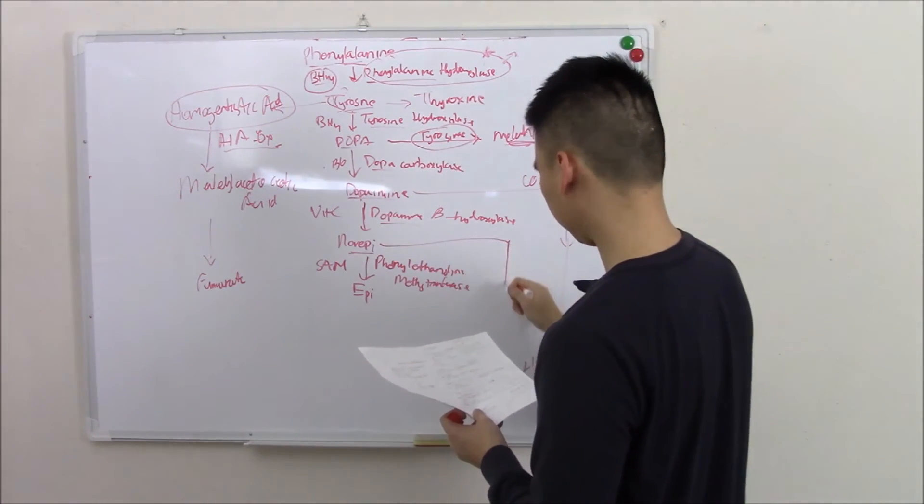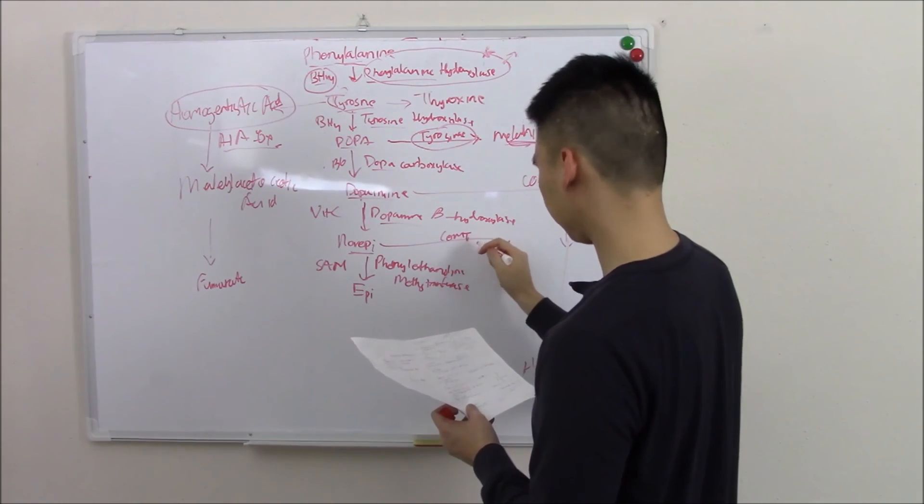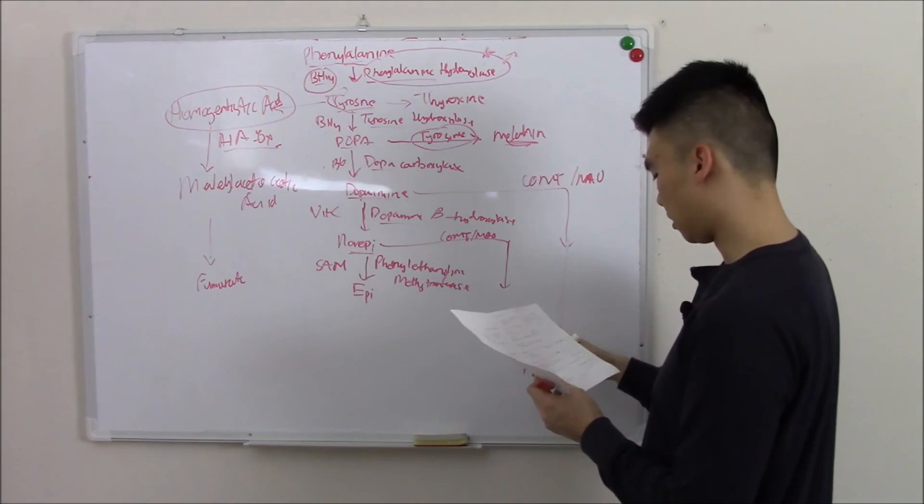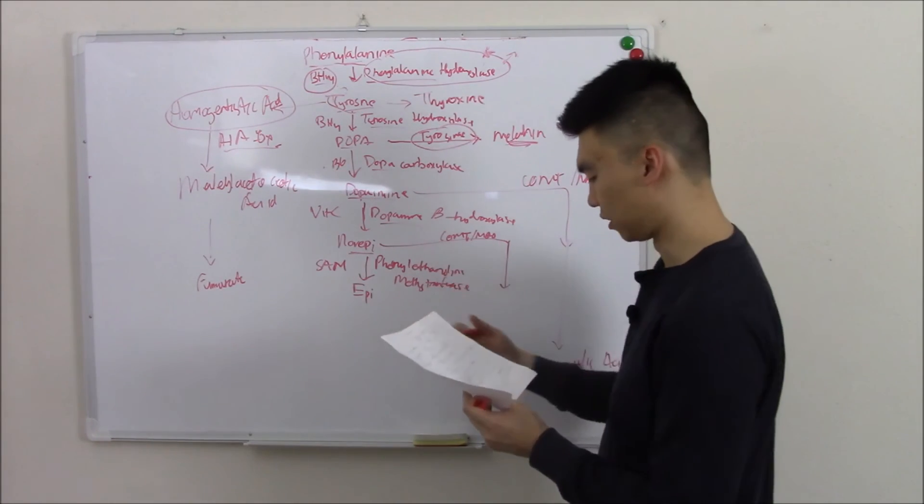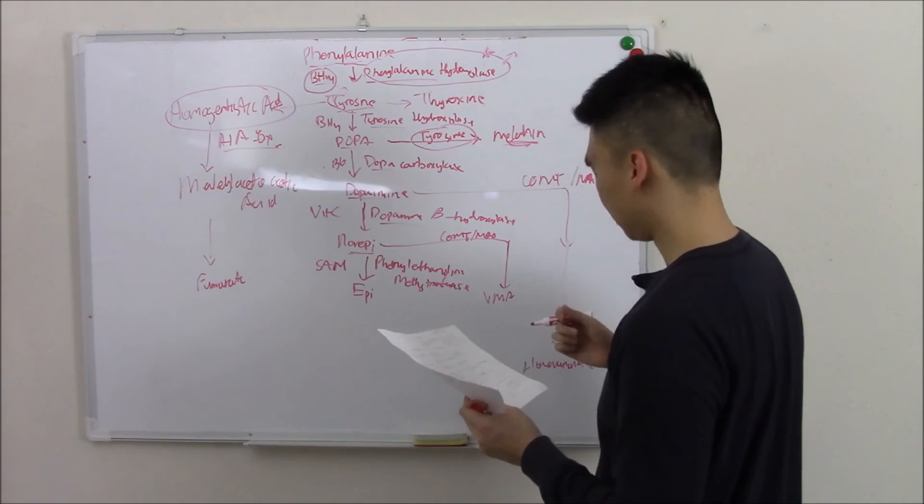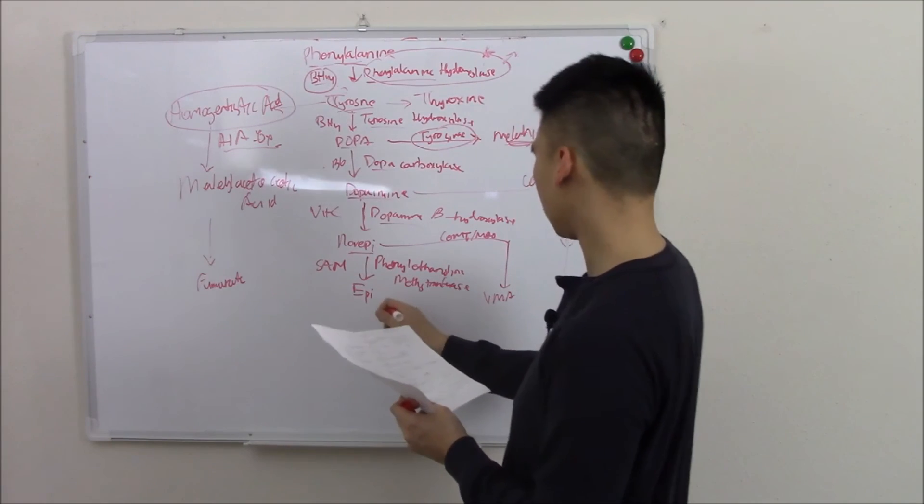Norepinephrine gets broken down by COMT and MAO to become VMA or vanillylmandelic acid. Epinephrine has the same fate.